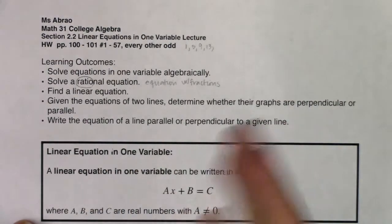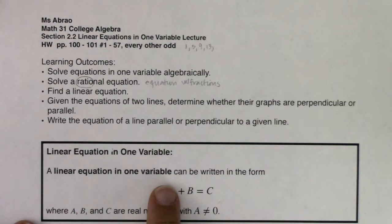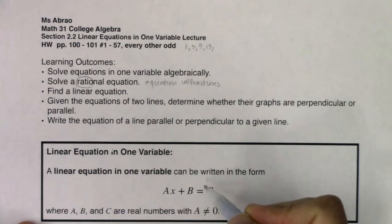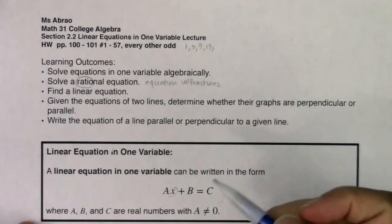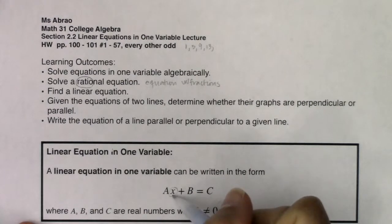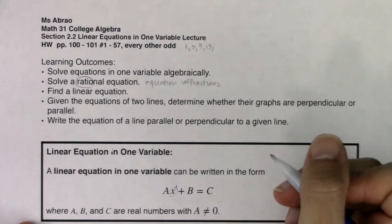Let's start with what I mean when I say linear equations in one variable. A linear equation in one variable can be written in the form Ax + B = C, where A, B, and C are real numbers, and A can't be zero. The key piece of a linear equation is that when you look at your variable, which here is x, A, B, and C are constants. In order to be a linear equation, the power on x has to be one.